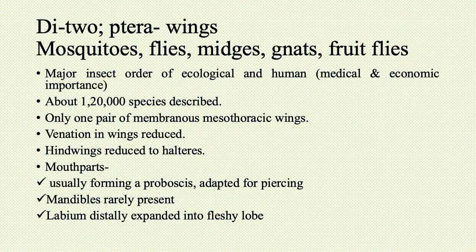Insects of this order are of medical and economic importance. There are about 1,20,000 species of dipterans described. They have a single pair of wings present on the mesothorax, hence these are known as mesothoracic wings. The venation present in the wings is very sparse — it is reduced. Hind wings are reduced into halteres.